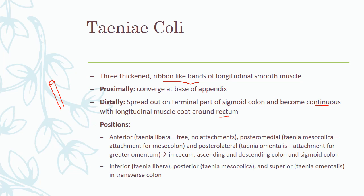The positions of the teniae coli are specifically important. We have an anterior teniae, an anterior band of smooth muscle known as the teniae libera — it is free and not attached to any other structure. Then we have a posterior medial band known as the teniae mesocolica, which provides attachment to the mesentery of the colon or the mesocolon. Finally, we have a posterior lateral band known as the teniae omentalis, which provides attachment for the greater omentum.